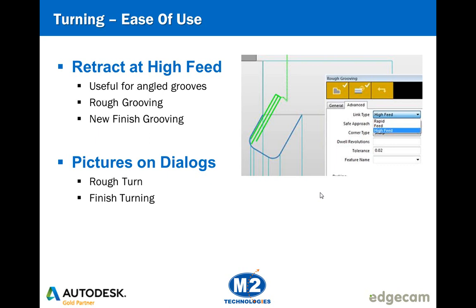On the grooving side, there are now retraction options for high feed. When working in an area with an angled groove, we need to make sure to withdraw the tool at the same vector angle that the feed rate happens at. If we command G0 there's a risk of breaking a tool on machines that do dog legs. So the retract at high feed option has been added into the link type for both the rough grooving and the new finished grooving cycle.